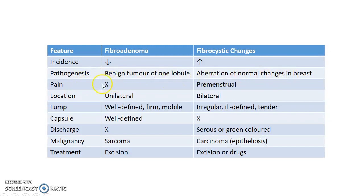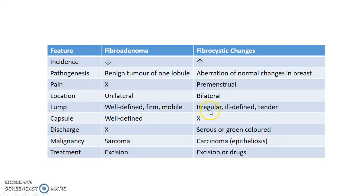There won't be pain in fibroadenoma whereas there will be pre-menstrual pain in fibrocystic breast changes. Fibroadenomas are usually unilateral whereas fibrocystic breast changes are bilateral. The lump in the case of fibroadenoma is well-defined, firm, and mobile, whereas the lump in fibrocystic breast changes is irregular, ill-defined, and tender.